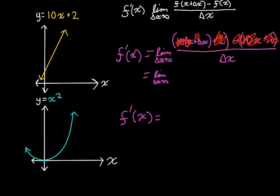So if we distribute that 10 out, we're going to have 10 delta x here. That's some really quick simplification. You can do that on your own if it was unclear. So we're going to have the limit as delta x goes to 0 of 10 times delta x over delta x.